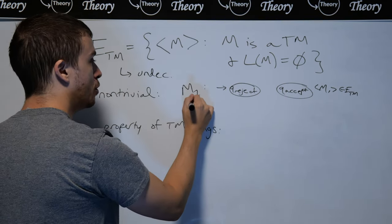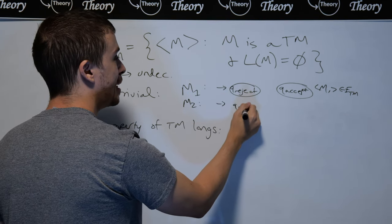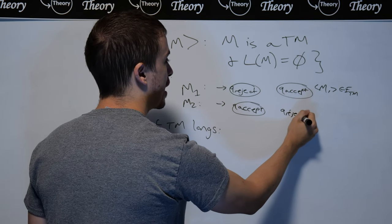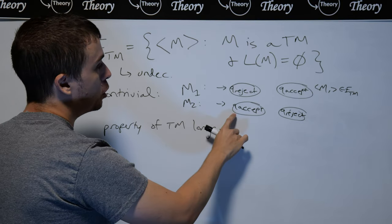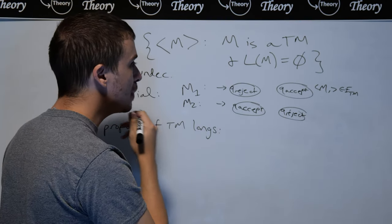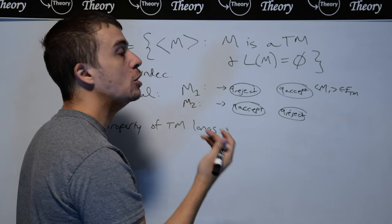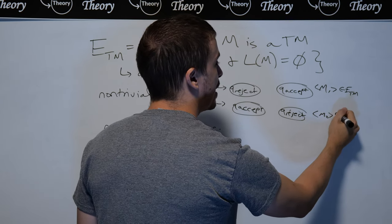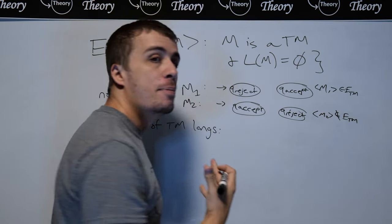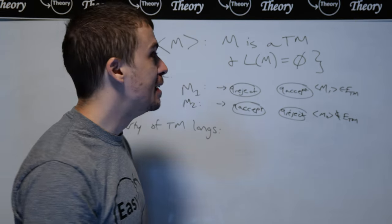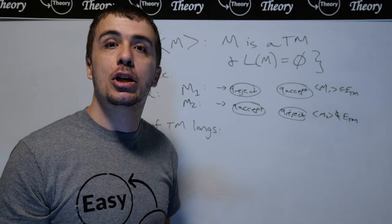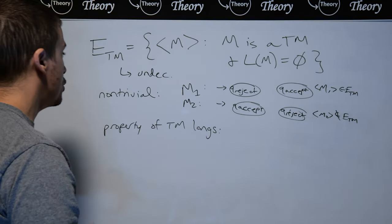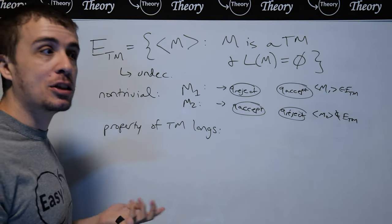If we do the exact opposite scenario — make the accept state the start state and the reject state not connected at all — then this M2 machine will accept every single string. Its language is sigma star, so it accepts everything. And therefore M2 is not in ETM. I could have picked any machine I wanted; it doesn't have to be this specific one, but it's a good idea to pick something very easy to deal with. So therefore, this property called ETM is non-trivial.